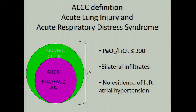It was basically defined on the basis of hypoxemia. That hypoxemia is defined as a PaO2/FiO2 ratio of less than 300 — that is, if the PaO2 on the blood gas divided by the inspired FiO2 was less than 300, that fulfilled the hypoxemia criterion. The second criterion was presence of bilateral infiltrates on chest X-ray. The third was no evidence of left atrial hypertension.